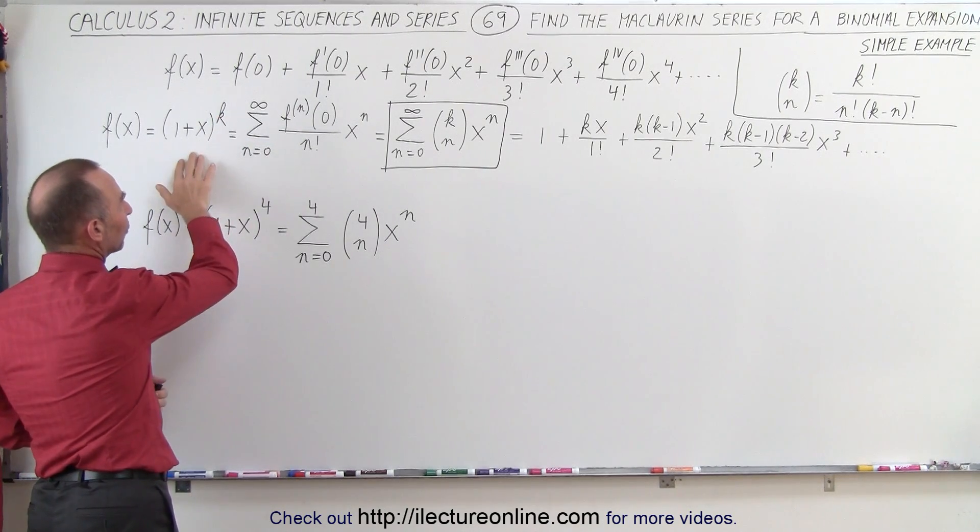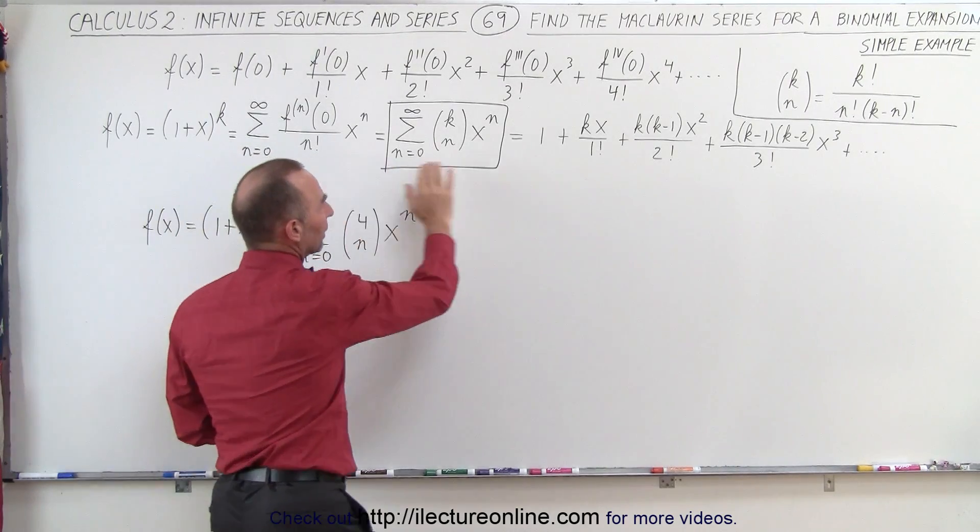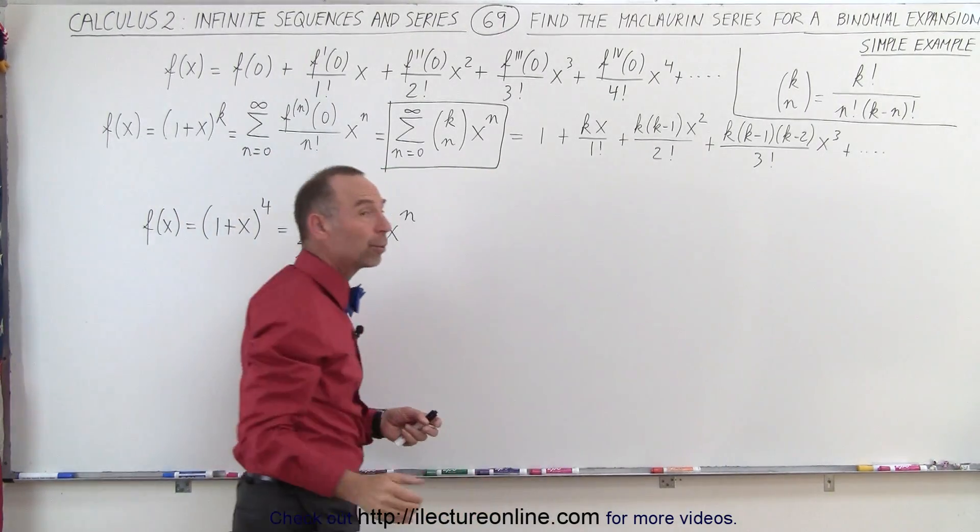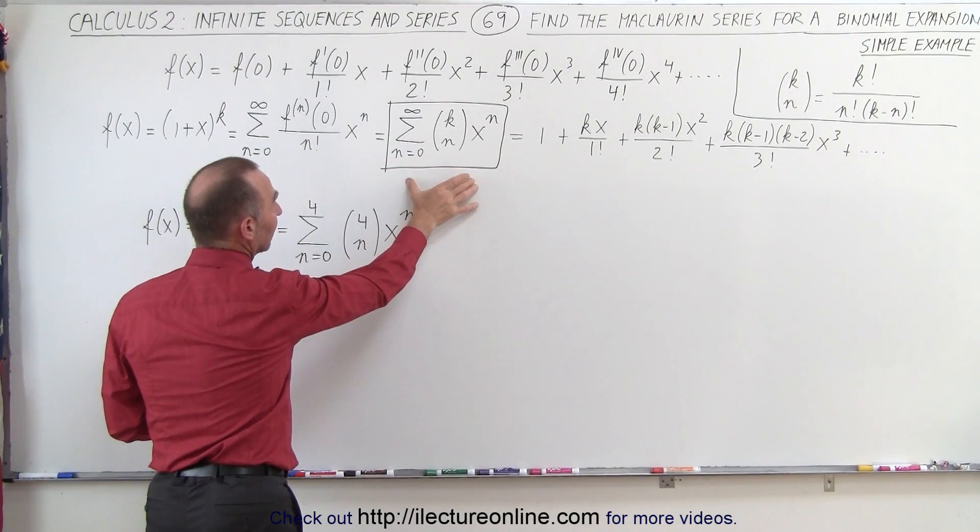We saw that using the Maclaurin series, we could write it in a compact form like this, which when we expand it is equal to this. But we also showed you that we can write it in a different compact form like this.